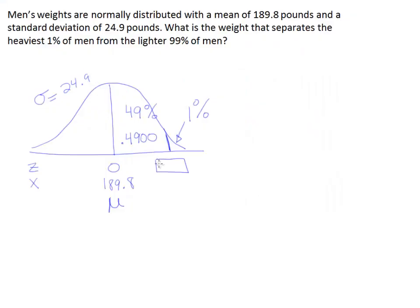All right, so that z-score is 2.33. It should be positive because it's on the right, so I'll leave it as a positive number. And then to finish this problem, we simply take that number and enter it into the formula.